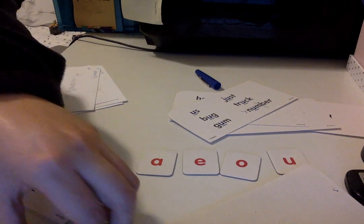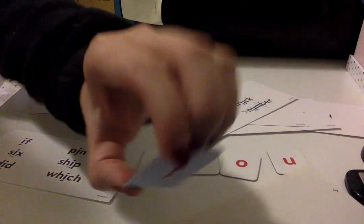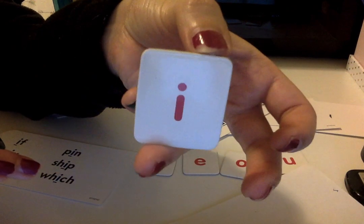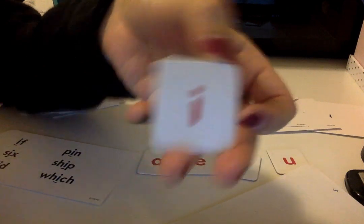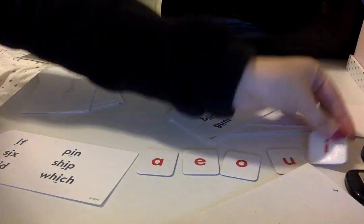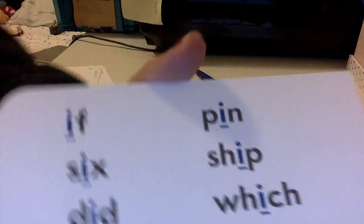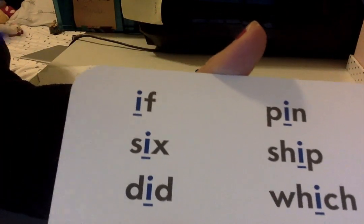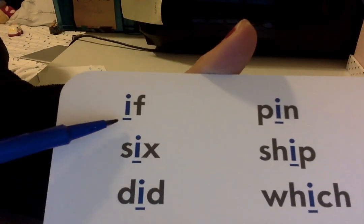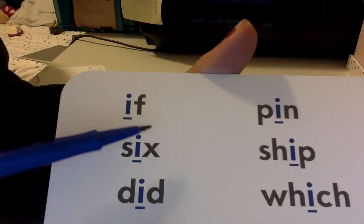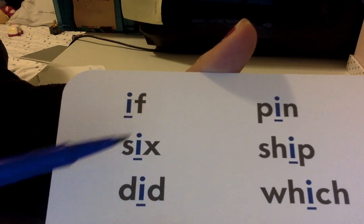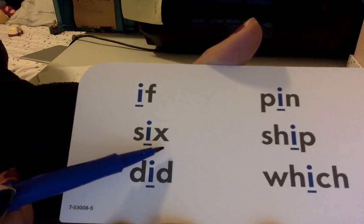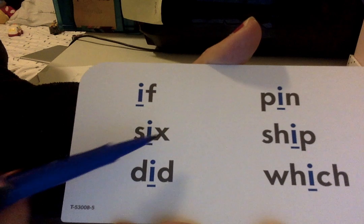Now let's read words with the 'ih' sound — for igloo. Ready? Make the sound: 'ih.' I-F — if. S-I-X — six.